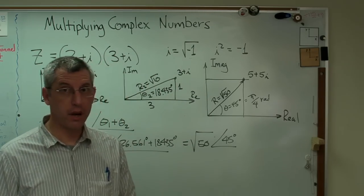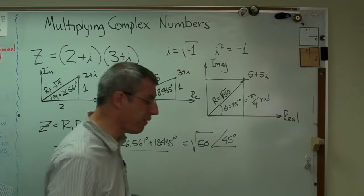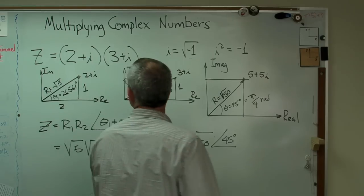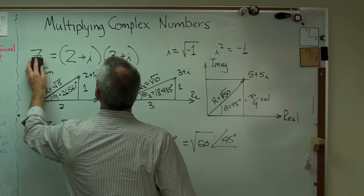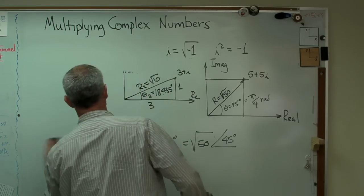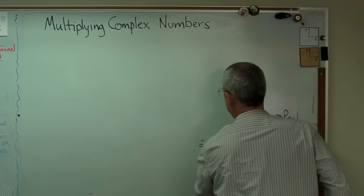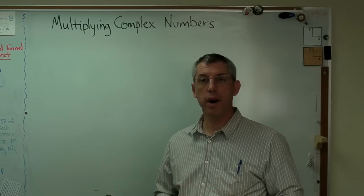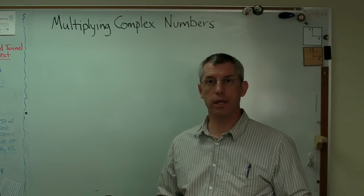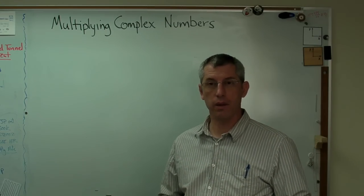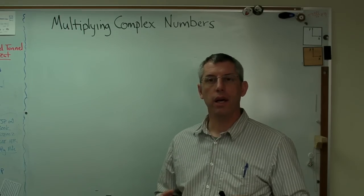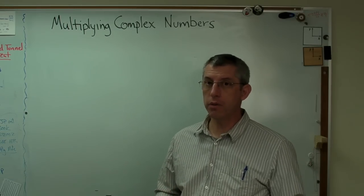Well, guess what? That's going to turn out to be square root of 50 at an angle of 45 degrees. So I got the same answer two different ways. I treated it as a polynomial, and then I multiplied it together using this polar notation, and it works. Now, let me tell you why. I'm going to have to erase all this stuff. If you need it, you can rewind the video.